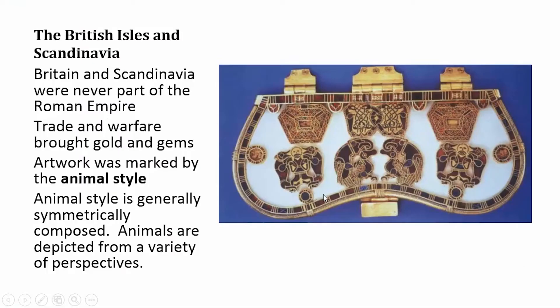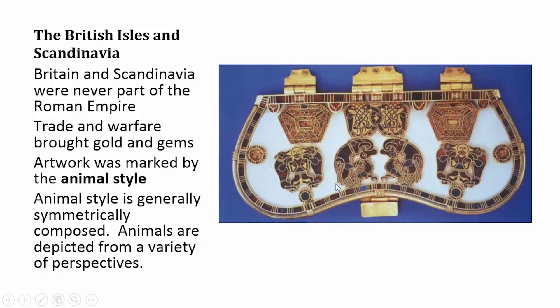If you look at the imagery on this purse cover, it's really interesting to me how similar these images of spread-eagled men are with the images at the top of this bull lyre. We know for a fact that these two cultures did not interact, but I think it's a testament to the human consciousness — that somewhere in the psyche there are archetypal images that come out in different artwork globally throughout cultures in different ways.